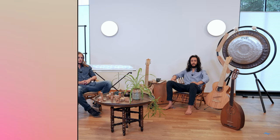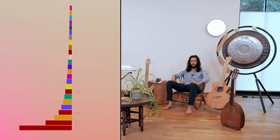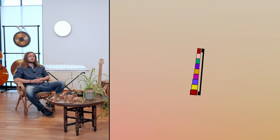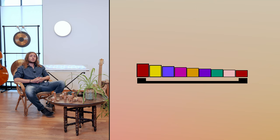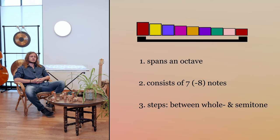The overtone series has constantly shrinking steps — each new octave gets divided into twice as many intervals as the preceding one, so the intervals shrink rapidly at first, then ever slower, approaching infinity. There's a sweet spot between the 8th and 16th overtone where it best meets our hearing expectation of what a scale should sound like. It spans an octave, consists of 7 or 8 notes, and uses step sizes between whole tones and semitones.